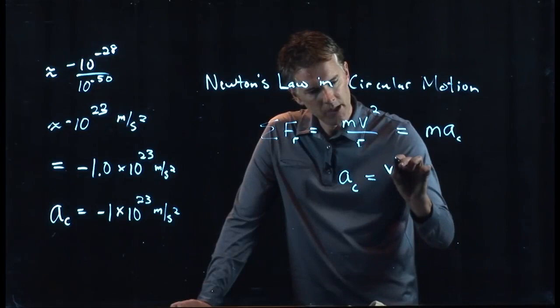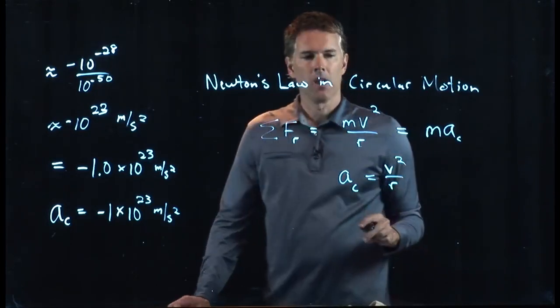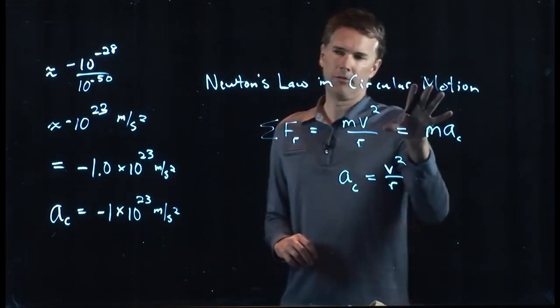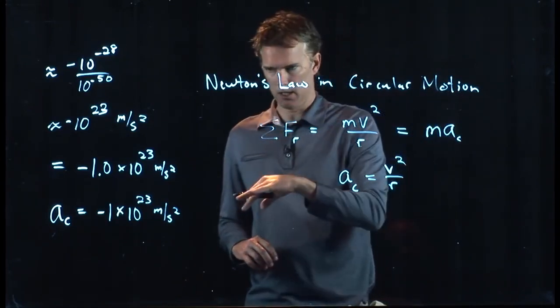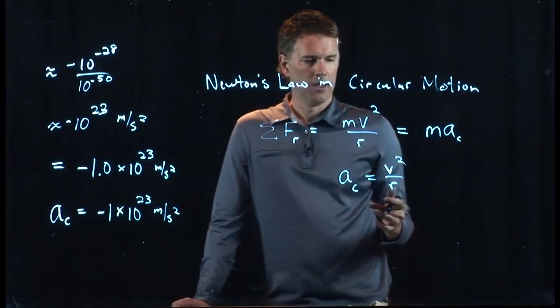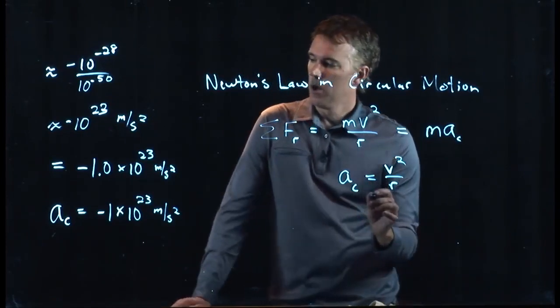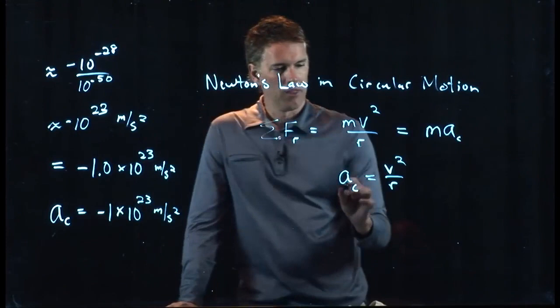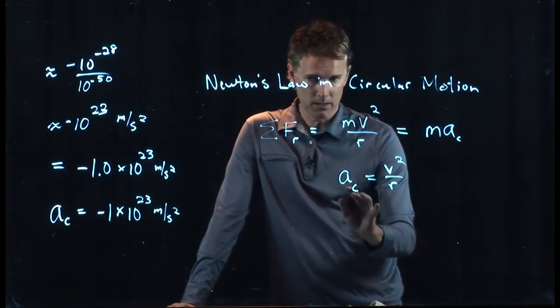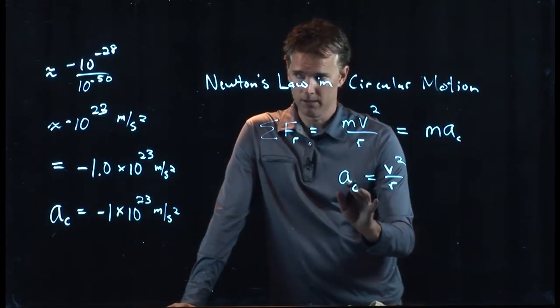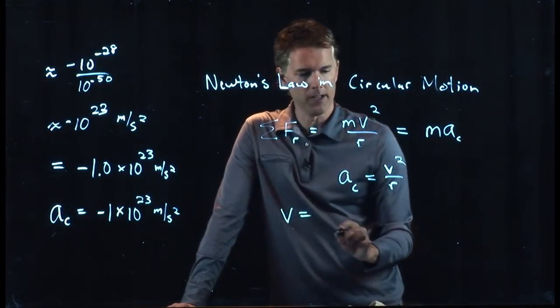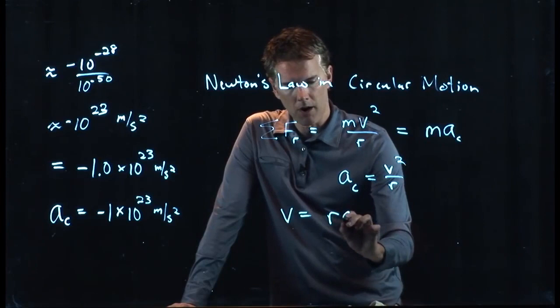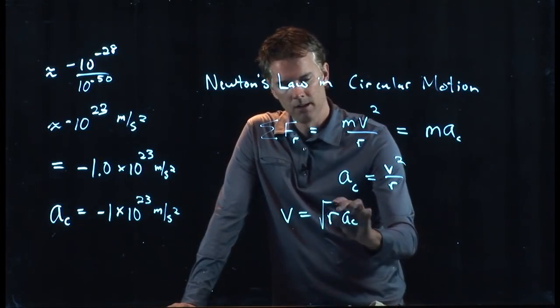We had the sum of the forces in the radial direction have to add up to mv squared over r. And those forces have to equal the mass times the acceleration, and therefore the acceleration, specifically centripetal acceleration, is v squared over r. We're talking about uniform circular motion. We're not accelerating the electron tangentially or slowing it down. And so we just have centripetal acceleration. We now have a number for that. This, we're only worried about the magnitude, not the direction. So we put in a positive number here, and we can solve this now for v. v is r ac, square rooted.